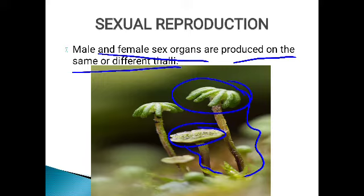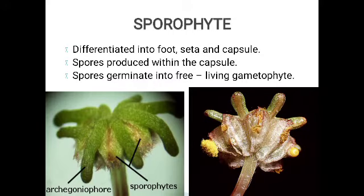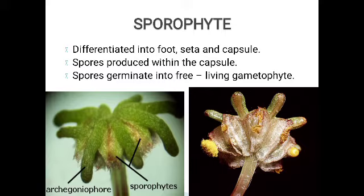Even if on the same thallus, some moisture or a water droplet is required. The antherozoid — the male gamete — reaches the egg — the female gamete — and fertilization occurs. As a result of fertilization, a diploid zygote is formed. It is diploid because it receives two sets of chromosomes: one set from the male gamete and another set from the female gamete.